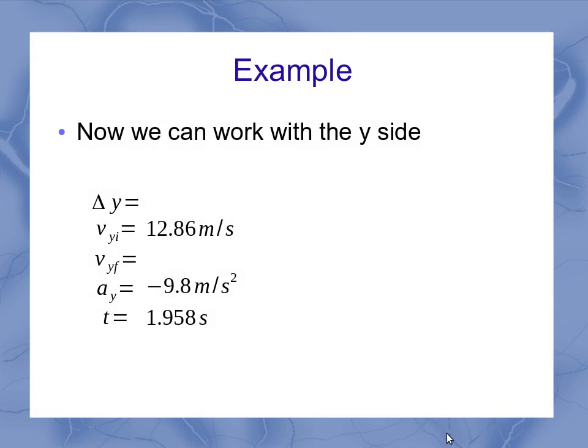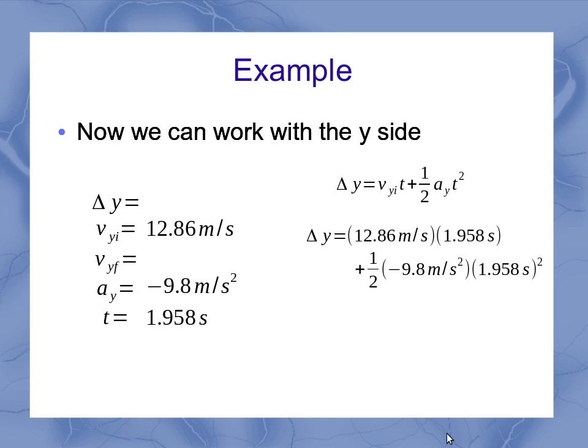So if I've got my list for quantities for the y side, now I've got three things, and I can solve for my delta y. So I use my vertical displacement equation, fill in all the things I know now, and end up finding that I've got 6.39 meters for the height above the ground that the water balloon hit. So that solves my original problem.